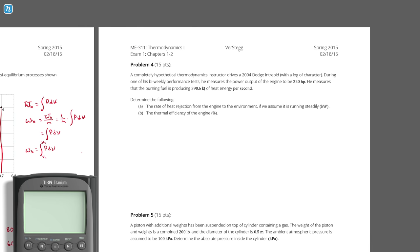Problem 4. A completely hypothetical thermodynamics instructor drives a 2004 Dodge Intrepid with a lot of character. During one of his bi-weekly performance tests, he measures the power output of the engine to be 220 horsepower. He measures that the burning fuel is producing 390.6 kilojoules of heat energy every second.